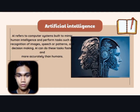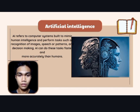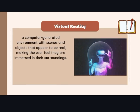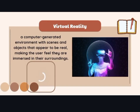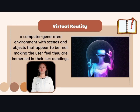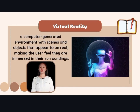Emerging trends: computer systems are believed to mimic human intelligence and perform tasks such as cognition, speech pattern recognition, and decision making. AI can do this faster and more accurately. Virtual Reality is a computer-generated environment with scenes and objects that appear to be real, making the user feel they are immersed in their surroundings.